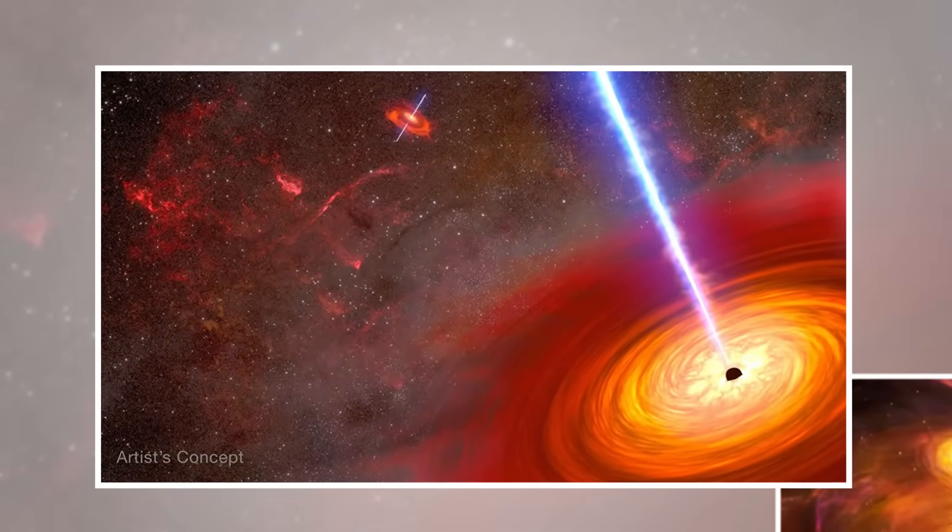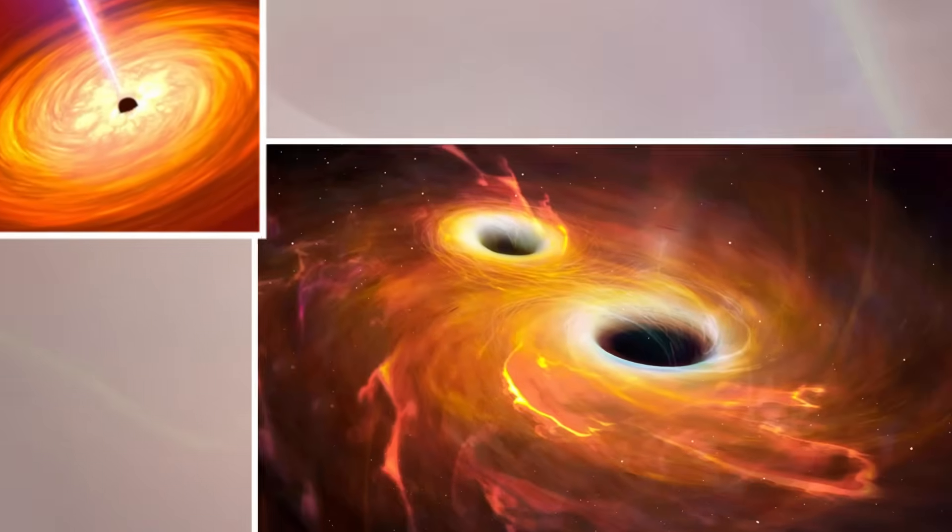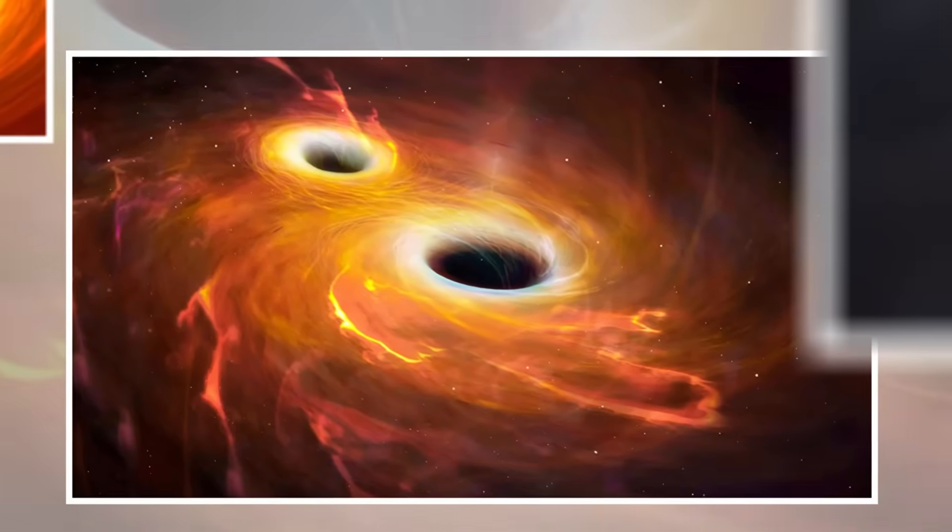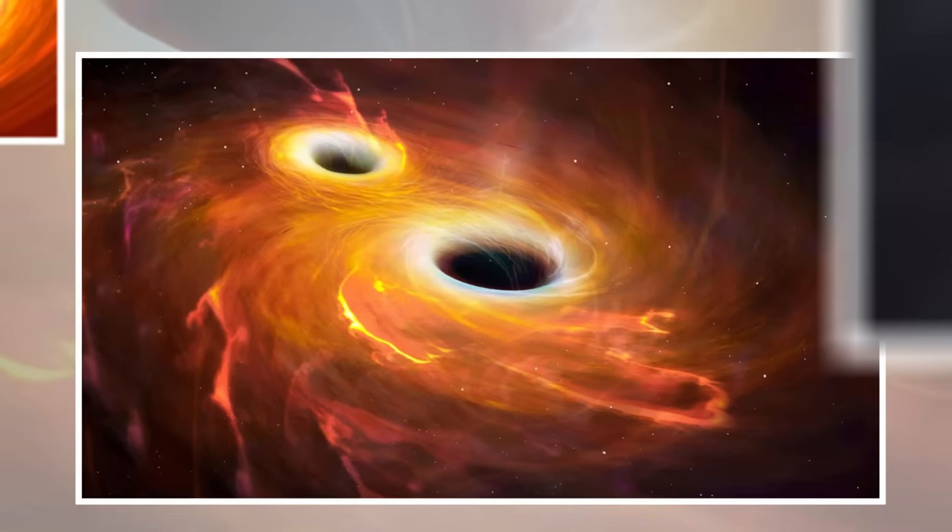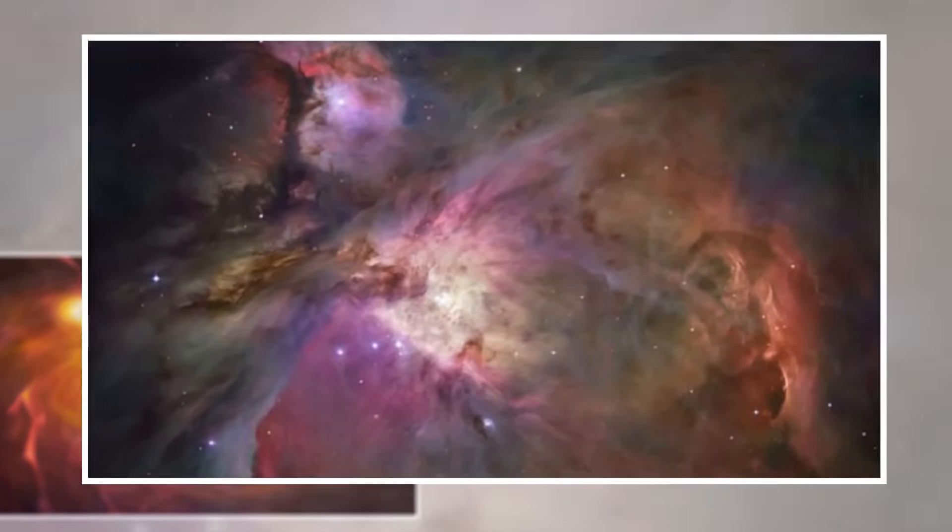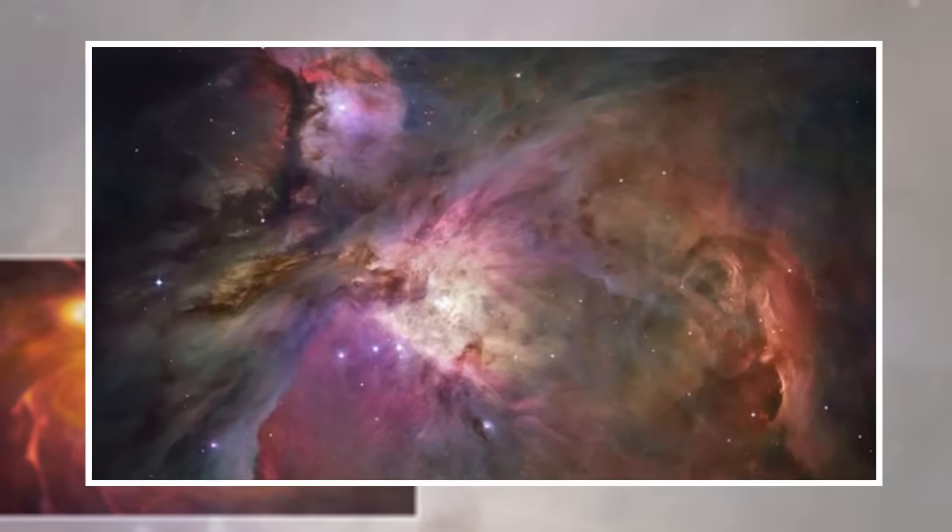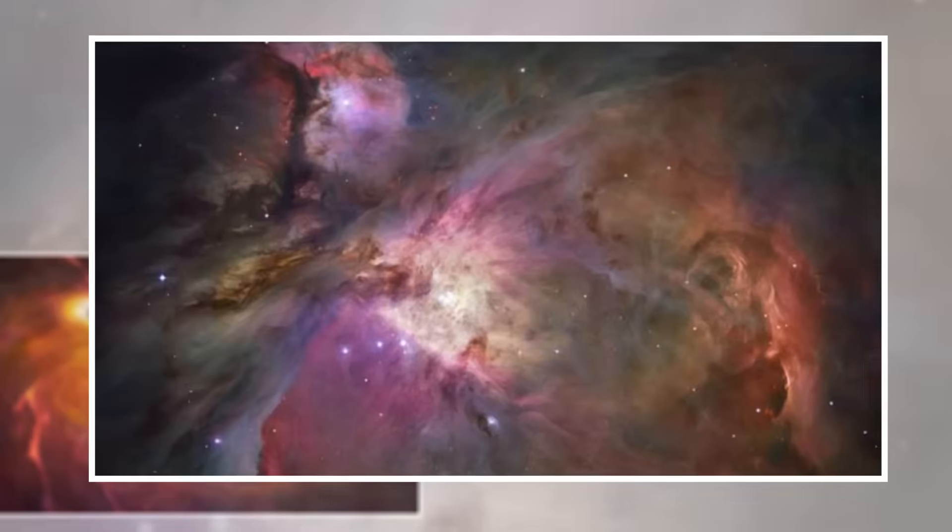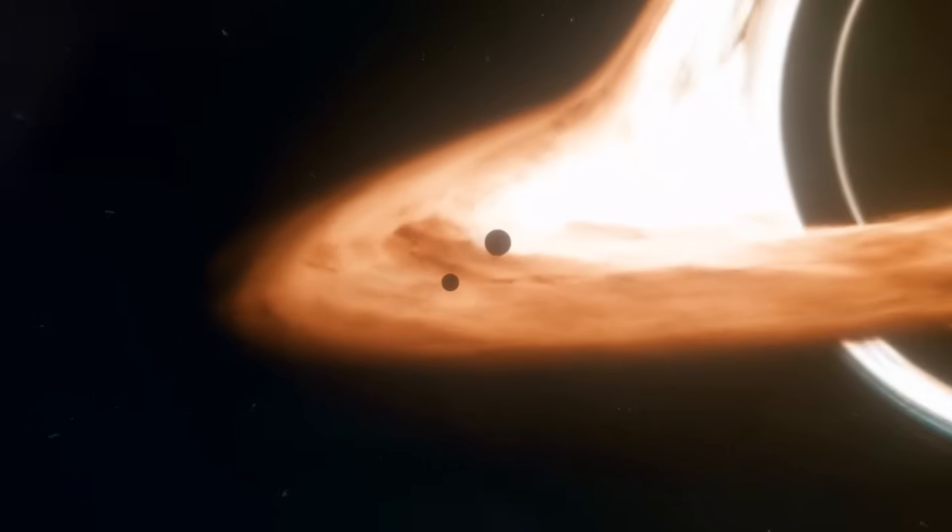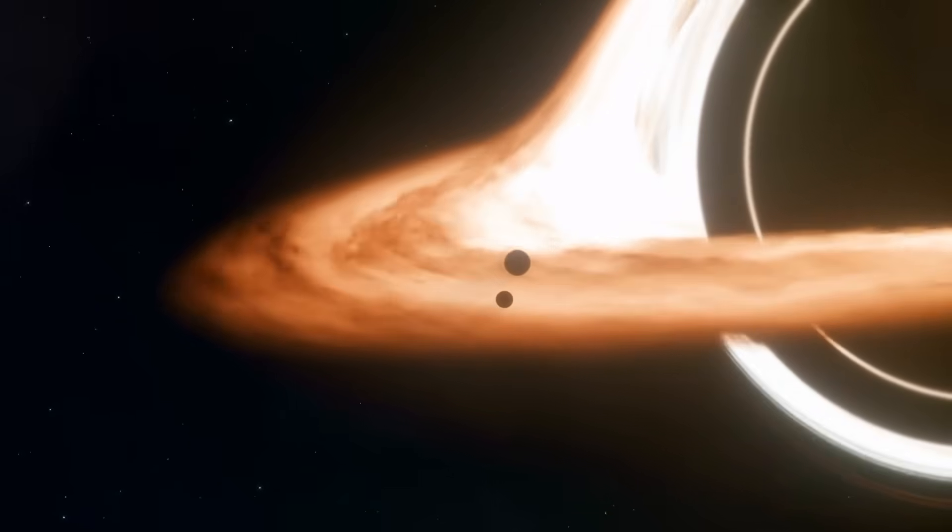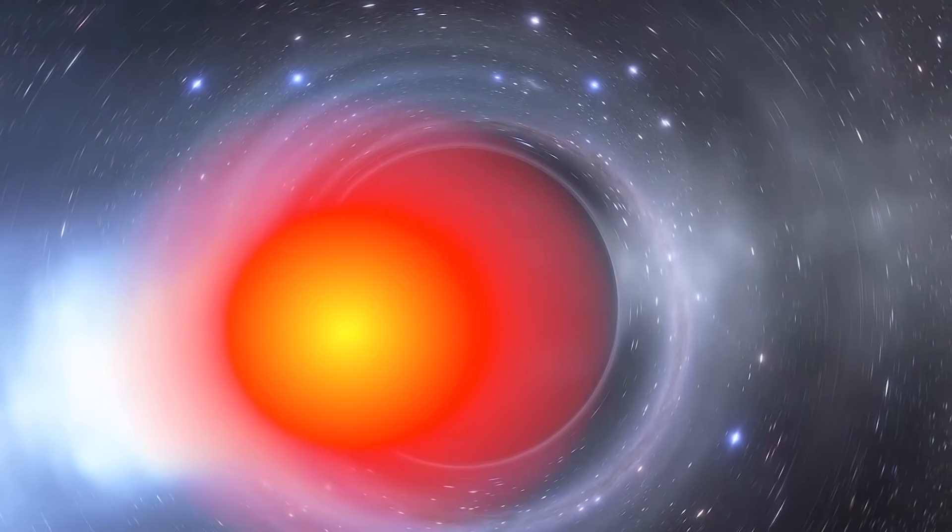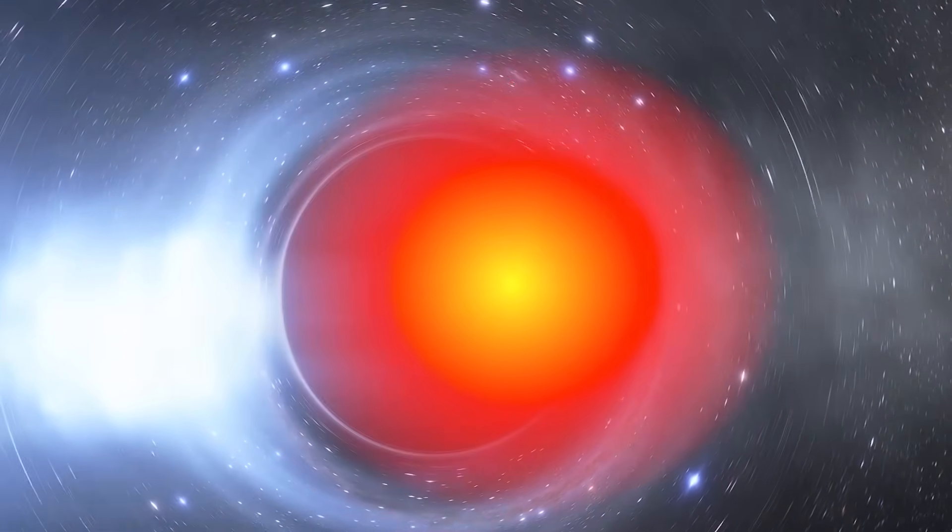Next, we have something totally different: Primordial black holes. These are tiny, ancient black holes that might have formed right after the Big Bang. Some scientists think they could explain dark matter, the mysterious stuff that makes up most of the universe. And finally, there are the theoretical extremes, extremal black holes. These are black holes that spin or charge at the maximum possible limit. They live on the edge of what's physically allowed and push our equations to the breaking point.